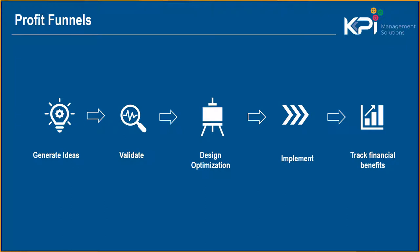If you're not getting income statement benefits, then you look at balance sheet or cash flow benefits. For instance, if you bring your inventory down, that's a balance sheet and cash flow impact — that's fine, we track those benefits. Lastly, if it's a non-financial project, we give it a proxy financial value and we still track the value through the five funnels.